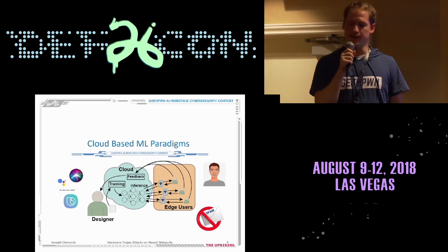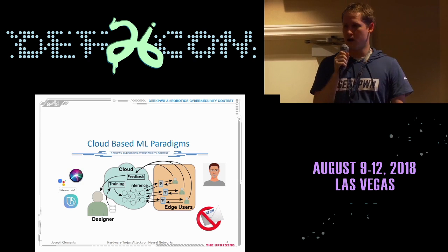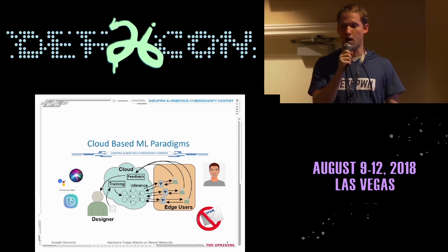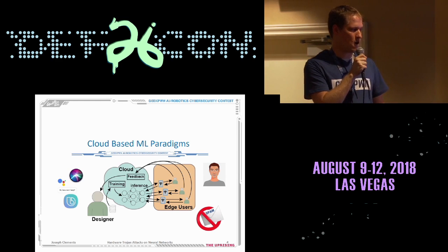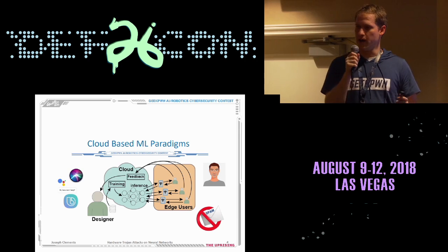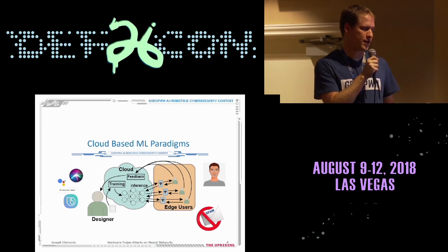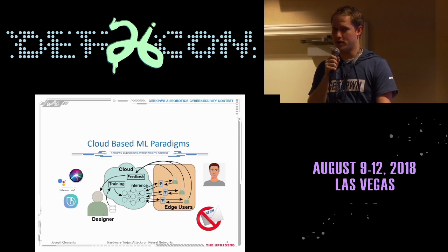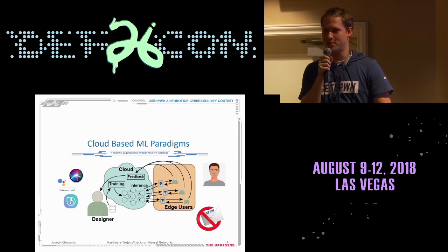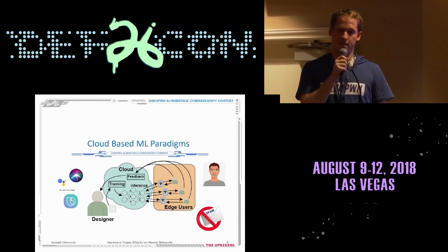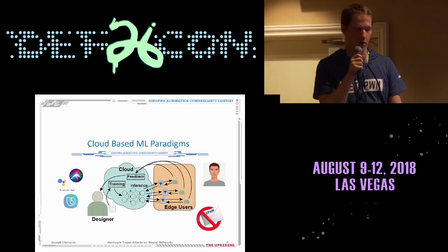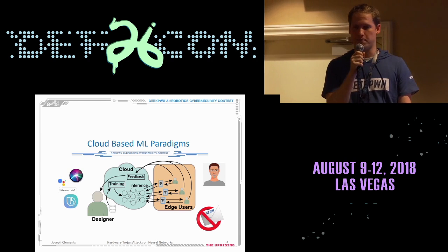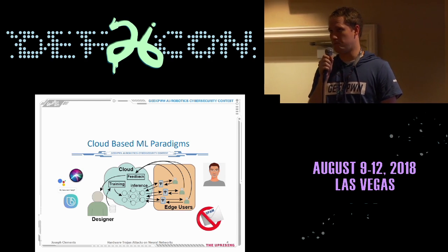The modern paradigm of machine learning is to implement machine learning in the cloud. In this system, a designer will first import data to the cloud, train that model on the cloud, and that model is then housed on the cloud. Whenever an edge user wants to infer with that model, the user will export their data to the cloud, the machine learning inference happens on the cloud, and the inference is sent back to the edge user. Systems like this include electronic assistants, facial recognition used by social media, and security applications such as email spam and malware prevention.